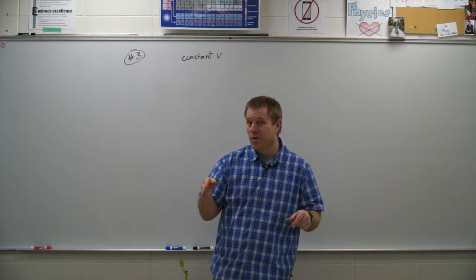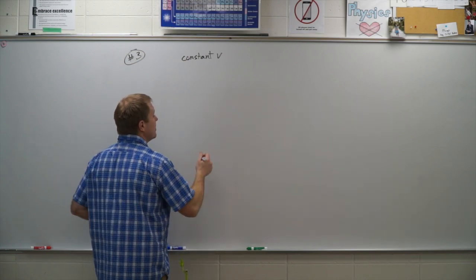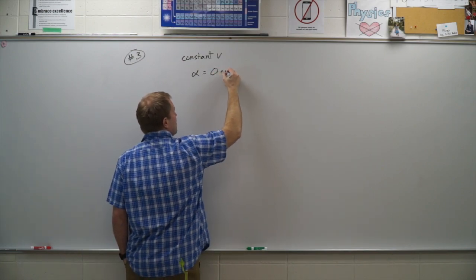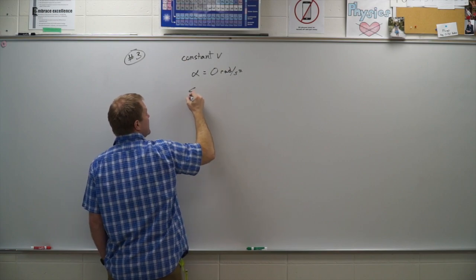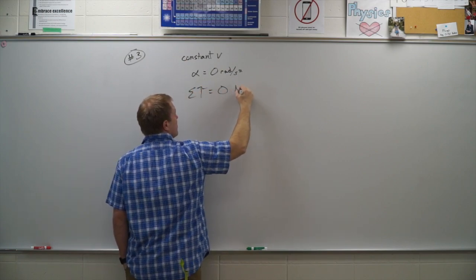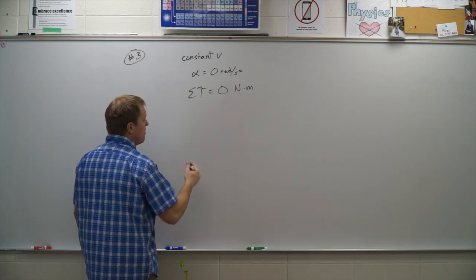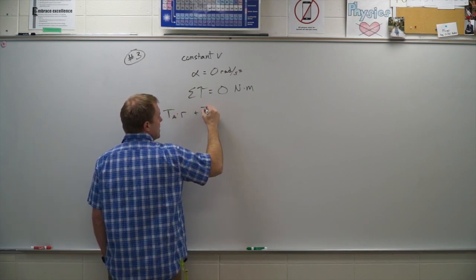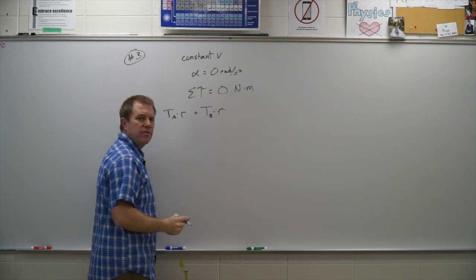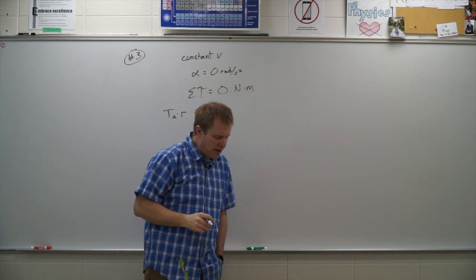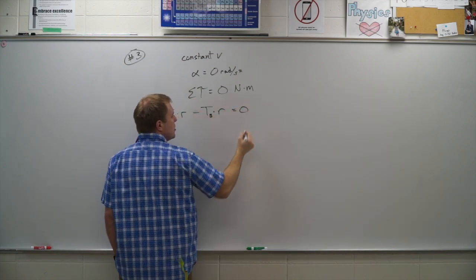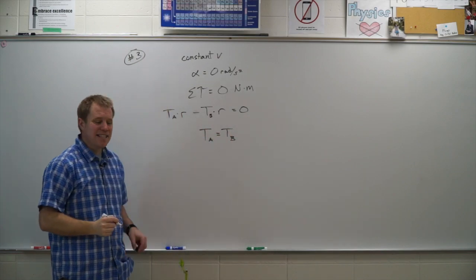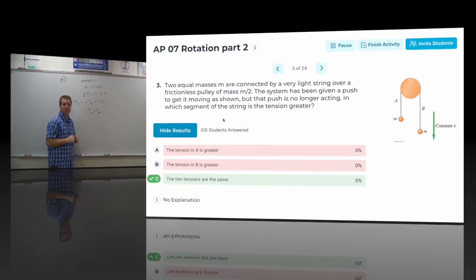The key word here is constant velocity. Constant velocity means the acceleration is zero — specifically the angular acceleration — which means the sum of the torques is also zero. When I add up the two torques: tension A times radius plus tension B times radius, with B in the negative direction, they sum to zero. So TA equals TB; they have the same tension. Correct answer: C.